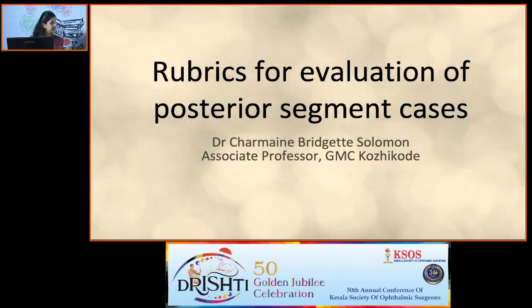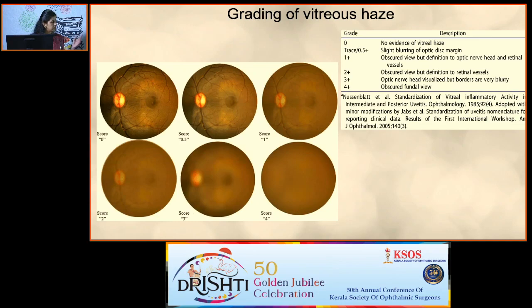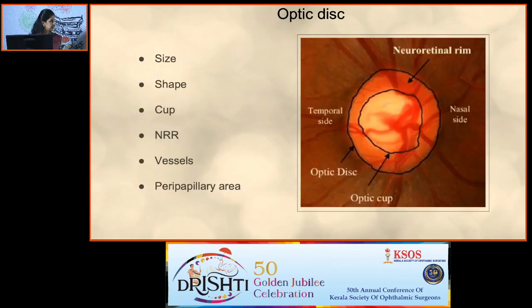Fundus cases come under the short case category — you don't get a history; you only see the fundus, so fundus drawing is of utmost importance. Before examining the fundus, assess media clarity using slit lamp and indirect ophthalmoscope. Localize any haze to cornea, lens, anterior chamber, or vitreous; grade vitreous haze 0 to 4+. Then examine the disc: mention size, shape, cup size, neuroretinal rim (NRR), color, and whether the ISNT rule is violated. Note vessels on the disc, exudates, and peripapillary vessels.